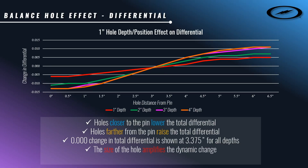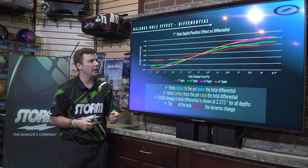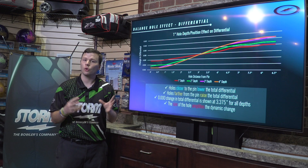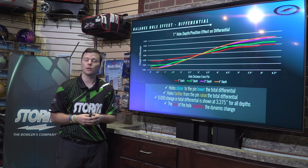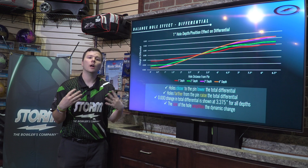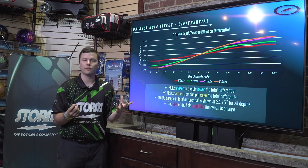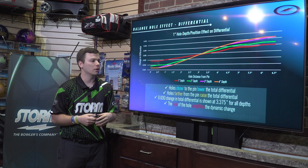There will still be a change in RG value at that spot, but not a change in total differential. Again, the size of the hole is going to amplify the dynamic change — just like with the previous slide. If you use a much smaller hole those lines are going to be closer together; a much larger hole and you're going to get those lines further and further apart.